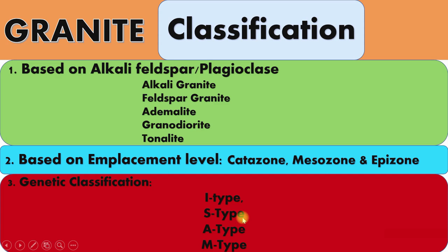A-type granites are anorogenic rift-zone granites, typically peralkaline. M-type granites are plagiogranites associated with ophiolites. We have already discussed what ophiolites are — these M-type granites are generally associated with those ophiolite sequences.